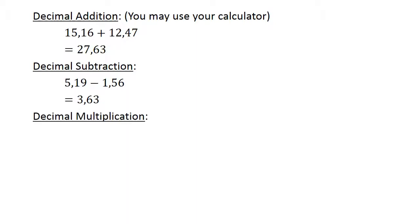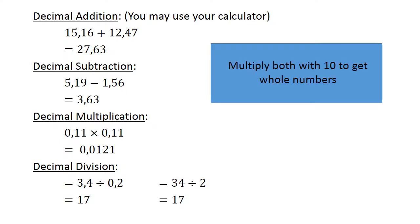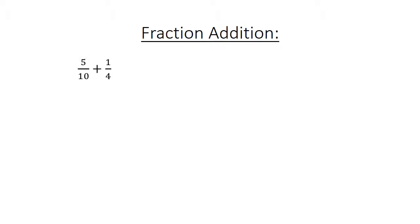Decimal multiplication: 0.11 times 0.11 equals 0.0121. Decimal division: 3.4 divided by 0.2. Multiply both by 10: 34 divided by 2 equals 17.